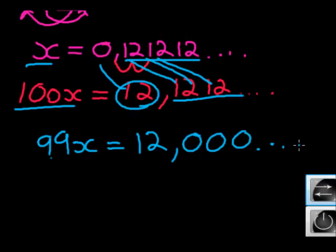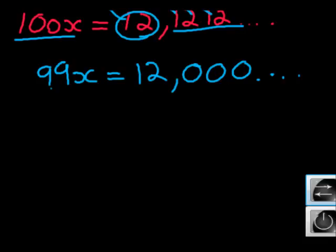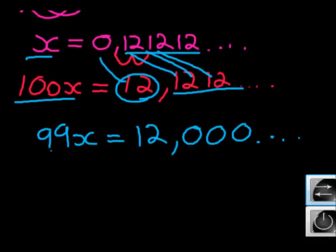So this is going to go on. I'm going to get 12 comma 0, 0, 0, 0. And again, x was equal to 0 comma 1, 2, 1, 2. So in this case,